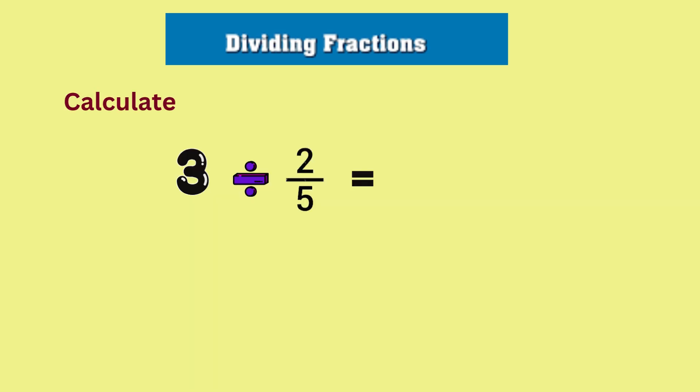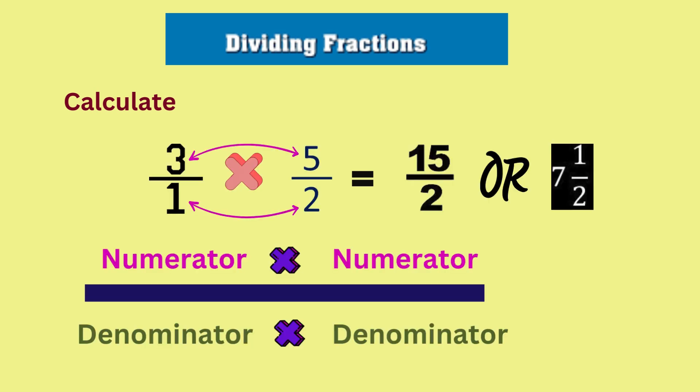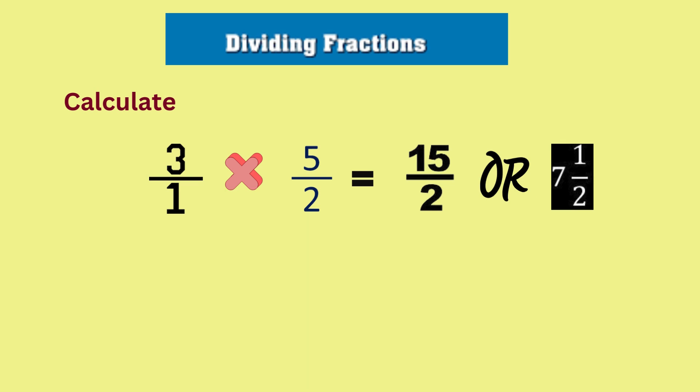Let's try a few examples. Three divided by two-fifths. In applying the rule, we take the reciprocal of two-fifths and multiply. So the problem becomes three times five halves, which gives us fifteen halves.